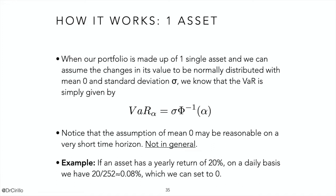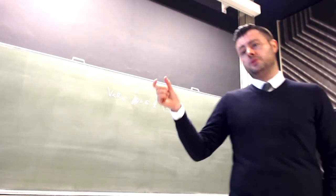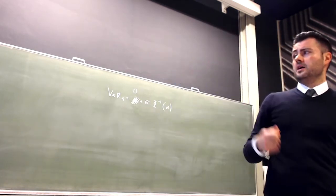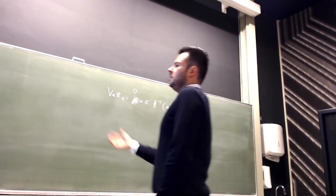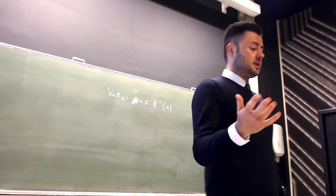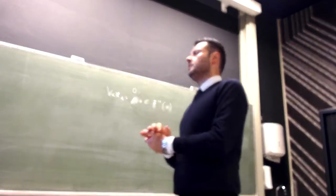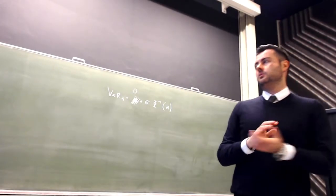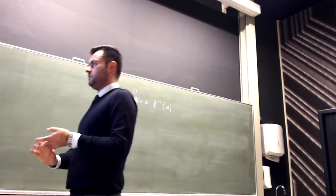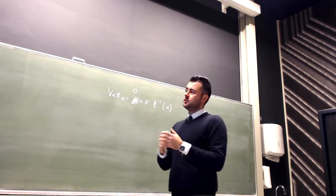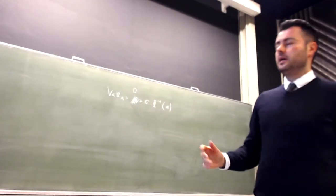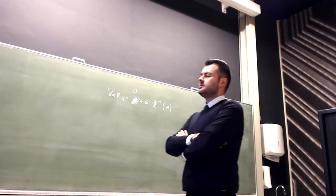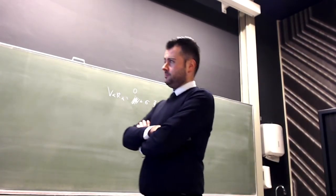Is it plausible to assume an average return of zero for a very short time horizon? Yes. For example, take a yearly return of 20%. Spread over the entire year using a commercial year, it is roughly 0.08%, which is close enough to zero to be set to zero. This is only true for very short time horizons — one day is short enough. So this is our daily risk: sigma times the quantile function of the standard normal at alpha.